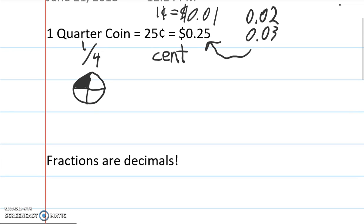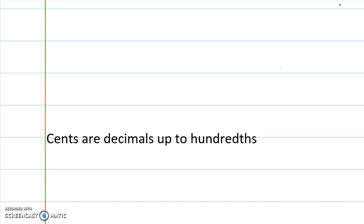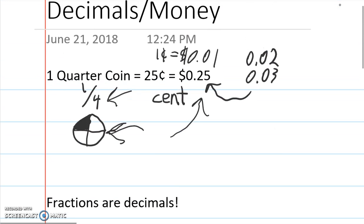But this is really cool because fractions are decimals. So, when we look at this pizza, or we look at this one over four, those are the same thing as this decimal. The other thing to say is that cents are decimals up to the hundredths. You can have a decimal much further than a hundredth. So, you can have a decimal going all the way down here, which is a thousandth, or you can have decimals going even further. But for now, we're just looking at hundreds.